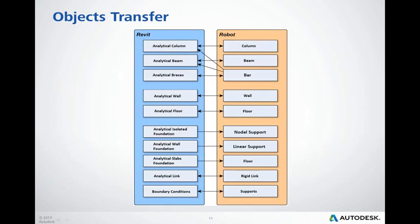This slide shows how objects are transferred between Revit and Robot. Some transfers are unidirectional, some bidirectional. Particularly note the bottom part of the picture: supports modelled in Revit as physical objects are exported only to Robot. Robot supports are translated to analytical boundary conditions in Revit.